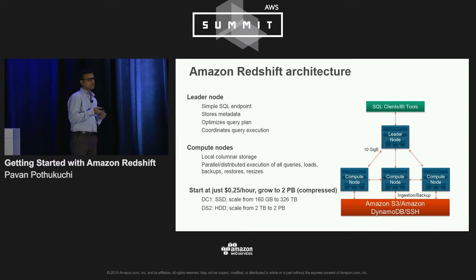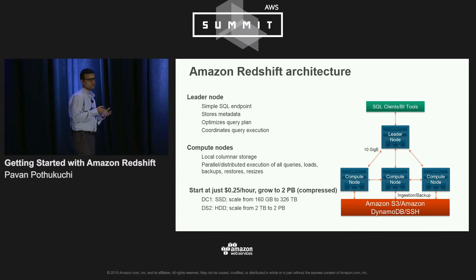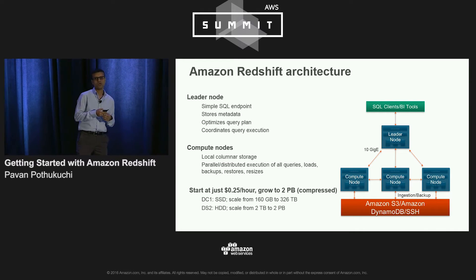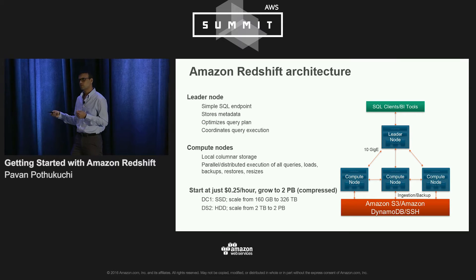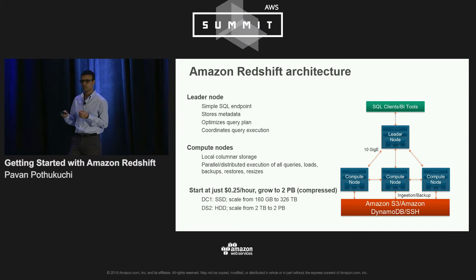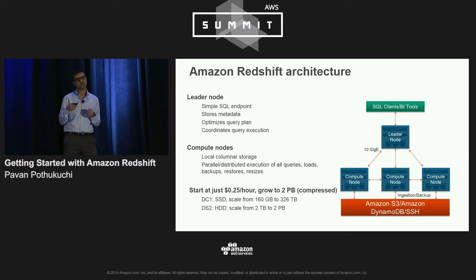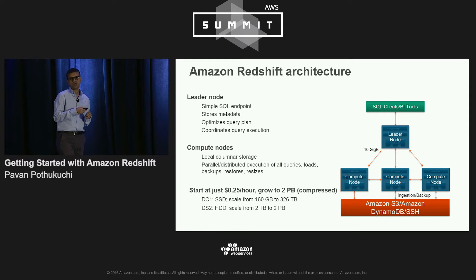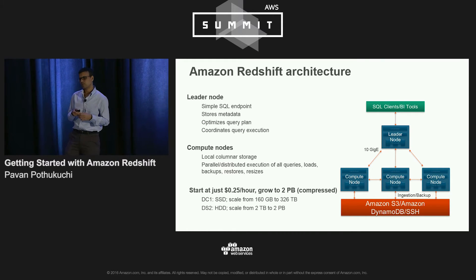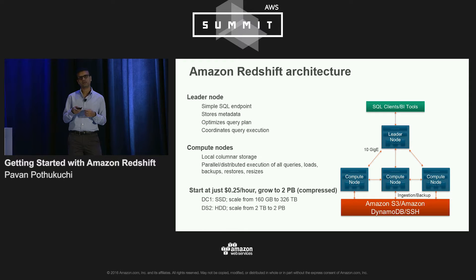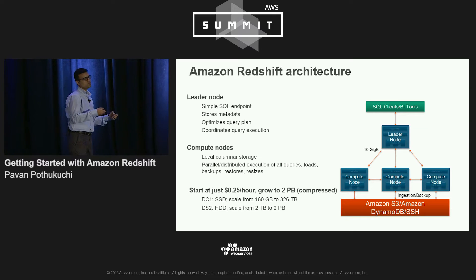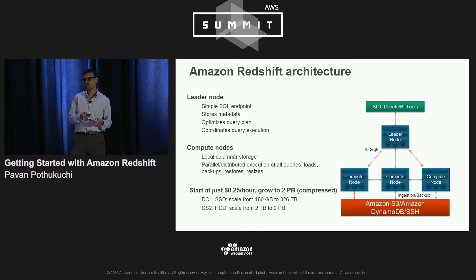Let's talk about Amazon Redshift's architecture. Redshift has a leader node which acts as a simple SQL endpoint. When you're executing queries through your BI tool or SQL client, the leader node accepts your queries. It stores the metadata associated with your data model — the tables, views, and objects you create. It optimizes the query plan, generates bytecode after parsing the query, and pushes that code to the compute nodes so each compute node can execute queries in parallel.